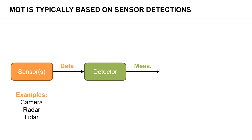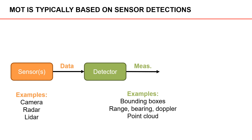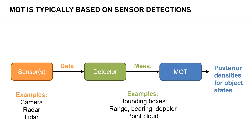In this course, we will use the terms measurements and detections interchangeably. So for example, from camera data we typically get image bounding boxes. From radars, we get range, bearing, and Doppler measurements. And from lidar sensors, we get so-called point clouds.